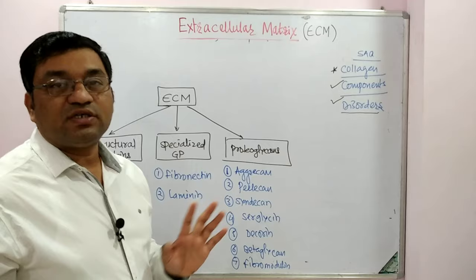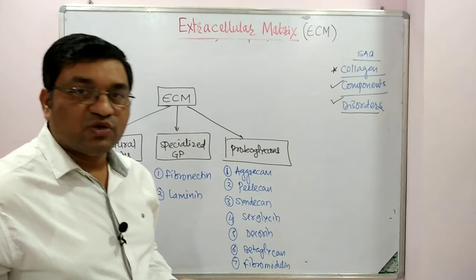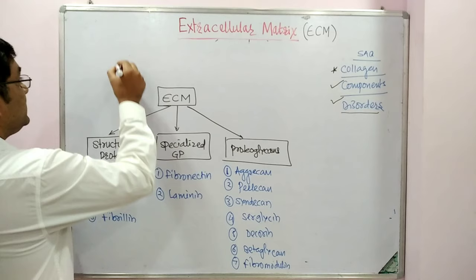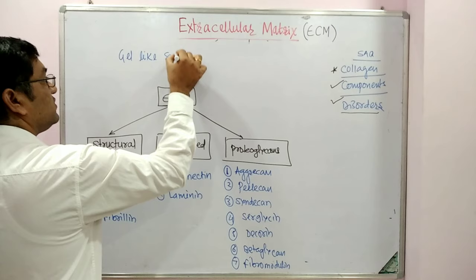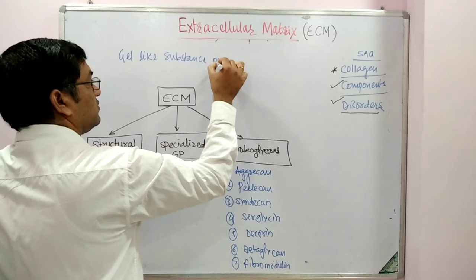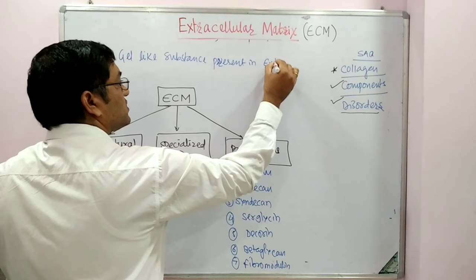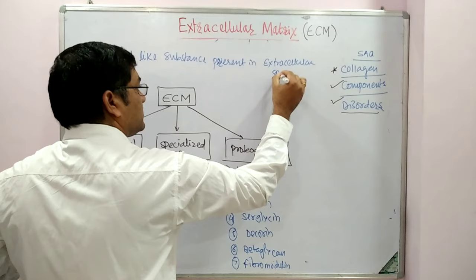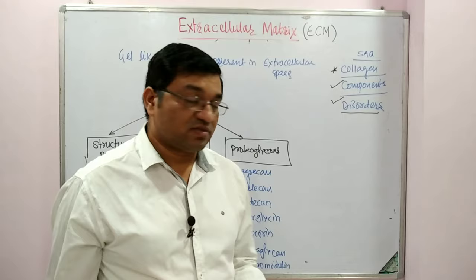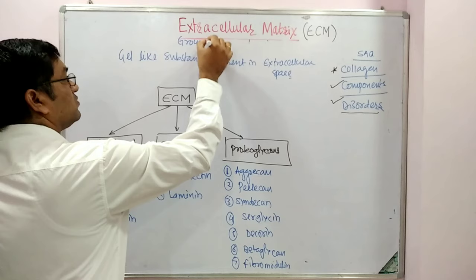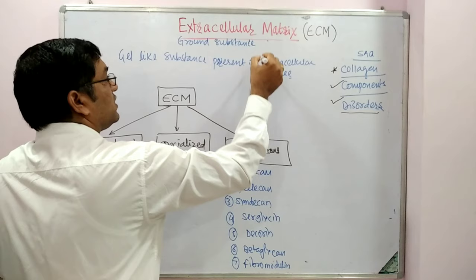In definition, what is the meaning of extracellular matrix? Extracellular matrix is a gel-like substance present in extracellular space. It is also known as ground substance, or also known as connective tissue.